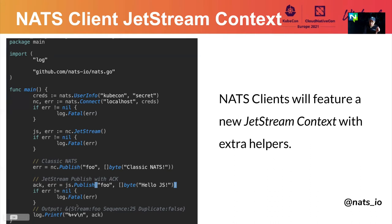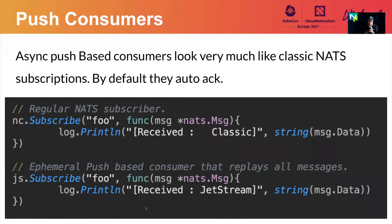As part of the metadata from the ACK response, you would know the sequence number and also whether the message you published was a duplicate. Push-based consumers using the NATS Jetstream client context are very similar to regular NATS subscribers — you're essentially reusing the Jetstream context to create on-the-fly an ephemeral push-based consumer.